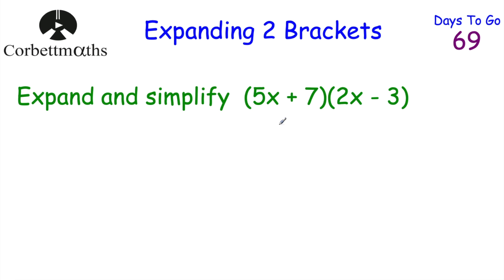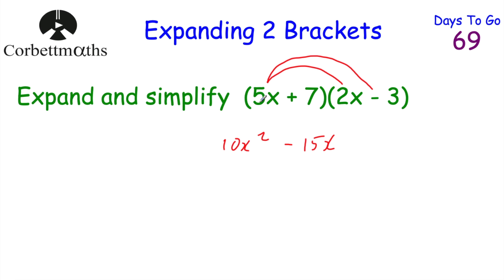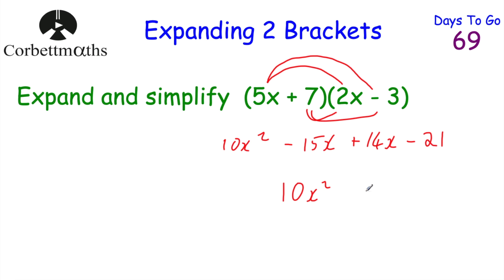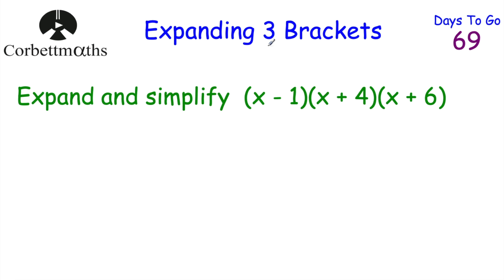Let's have a look at one last question on expanding two brackets: expand and simplify (5x + 7)(2x − 3). So we do 5x times 2x which gives 10x squared; 5x times minus three gives minus 15x. Now multiplying both terms by seven: seven times 2x gives plus 14x, and seven times minus three gives minus 21. Simplifying: minus 15x plus 14x gives minus x. So the final answer is 10x² − x − 21.